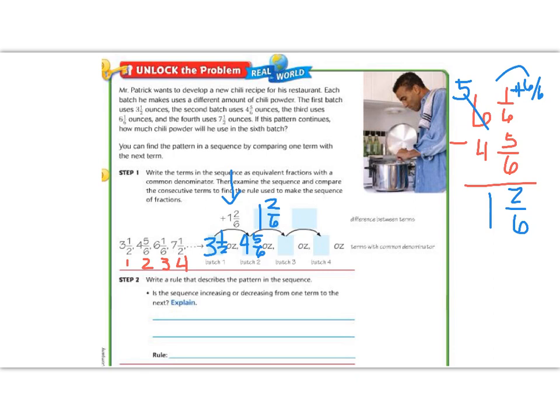Next we add 1 2/6, continuing the pattern, and we get 6 1/6. Then we add 1 2/6, next we get 7 1/2. So each time our rule is having us add 1 2/6 cups of chili powder.